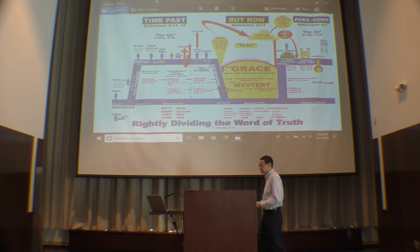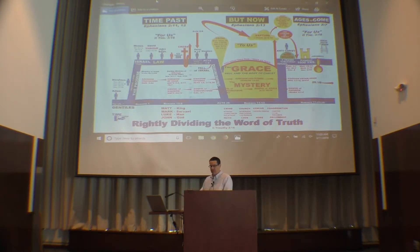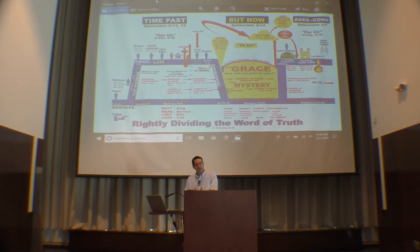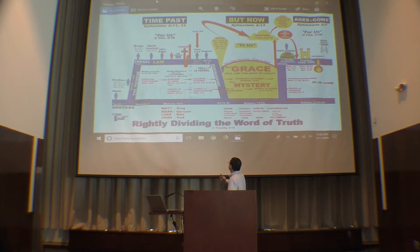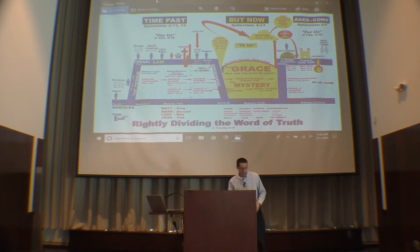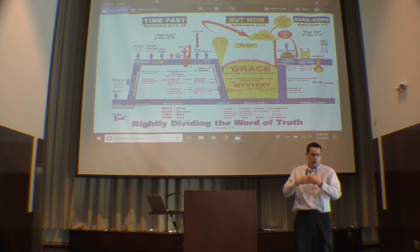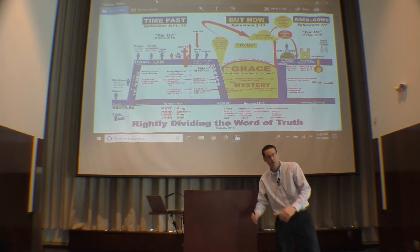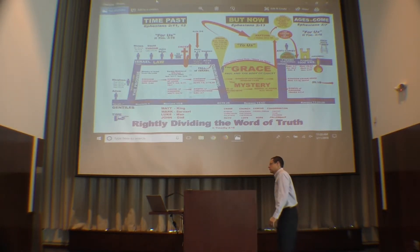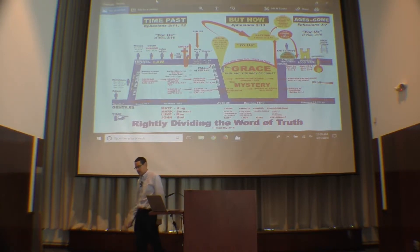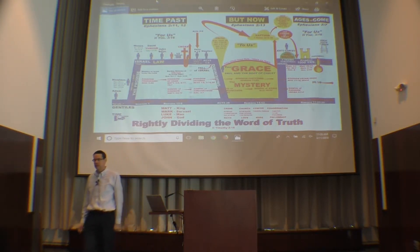Notice what verse 2 is saying: 'If you have heard of the dispensation of the grace of God, which is given me' — who was it given to? Paul. There was specific information given to Paul, for Paul to share with mankind. Now notice verse 3: 'How that by revelation he made known unto me the mystery.'